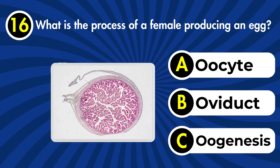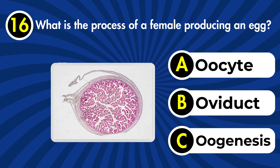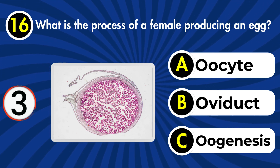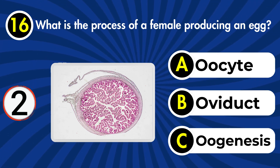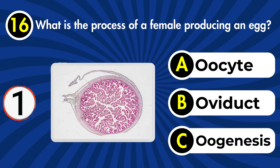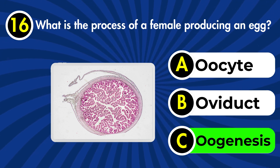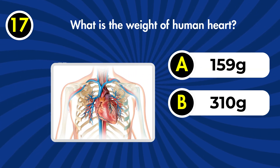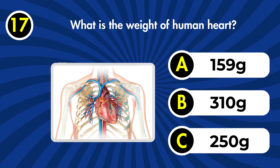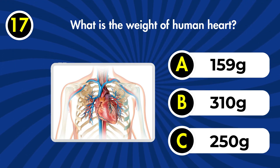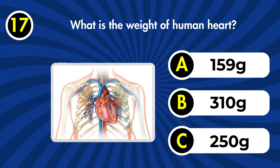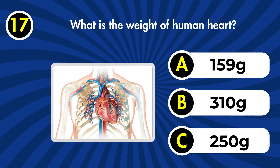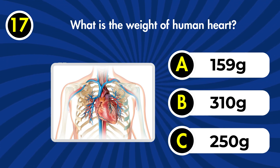Next question: what is the process of a female producing an egg? a) Oocyte, b) oviduct, c) oogenesis. Correct answer: c) oogenesis.